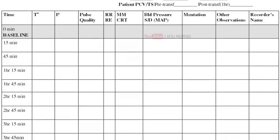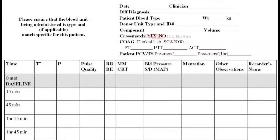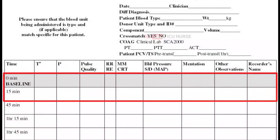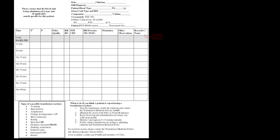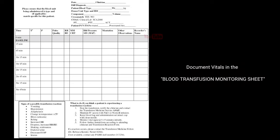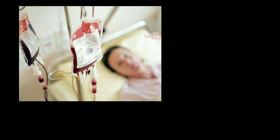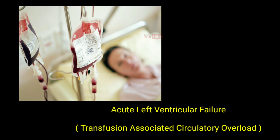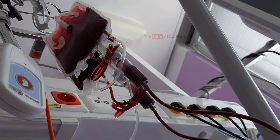Monitor the vital signs of the patient continuously throughout the procedure. A nurse should be more careful than usual in the first 15 minutes of the transfusion, as most patients usually show adverse blood transfusion reactions in this time frame. If there is a standard blood transfusion monitoring sheet in your hospital, follow that to document the vital signs regularly. Do not transfuse too quickly as it may cause acute left ventricular failure, also called transfusion associated circulatory overload. Do not transfuse too slowly either, as prolonging the transfusion more than 4 hours can damage the blood product and makes it unsafe.